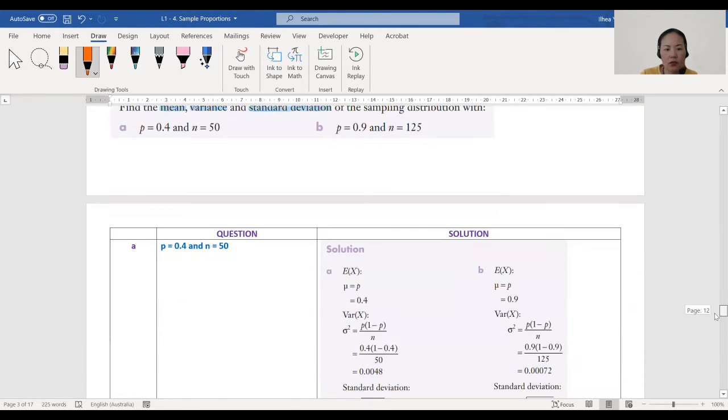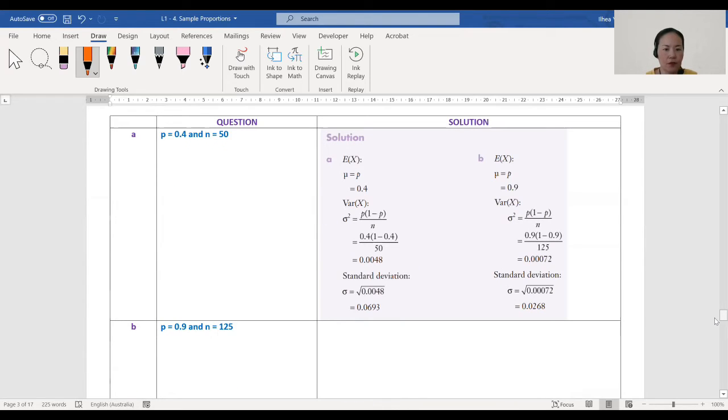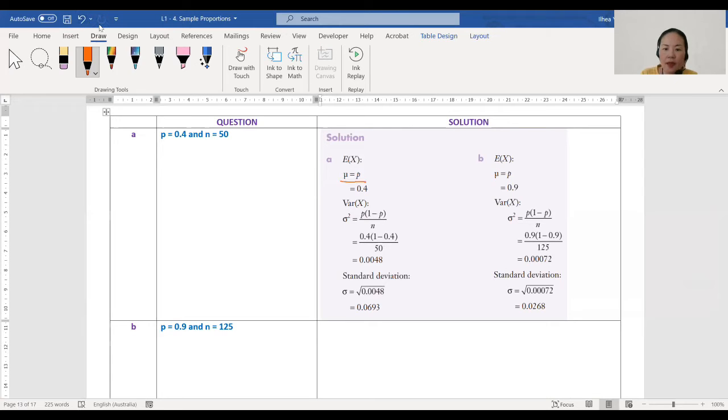You've got to do three things here. For part a, p equals 0.4 and n equals 50. We need to find the mean, variance, and standard deviation. First, the mean, which is our p, is 0.4. The variance is what we're going to use the formula for: we got p, therefore we can find q, which is 1 minus p, all over n, and n is 50.